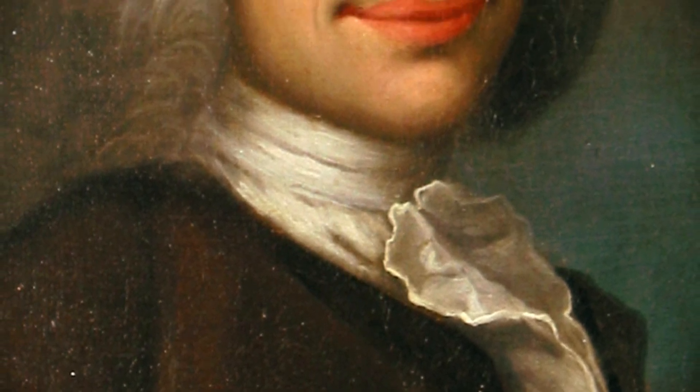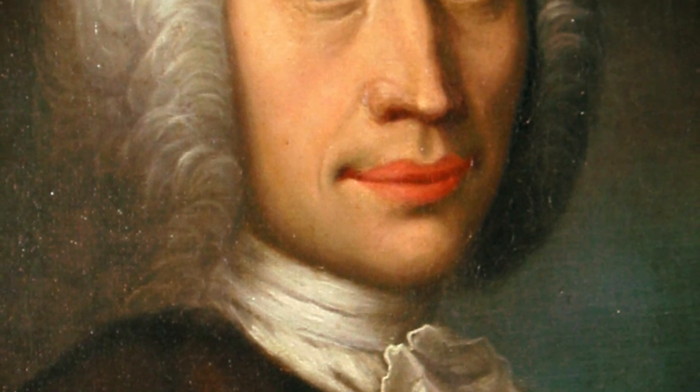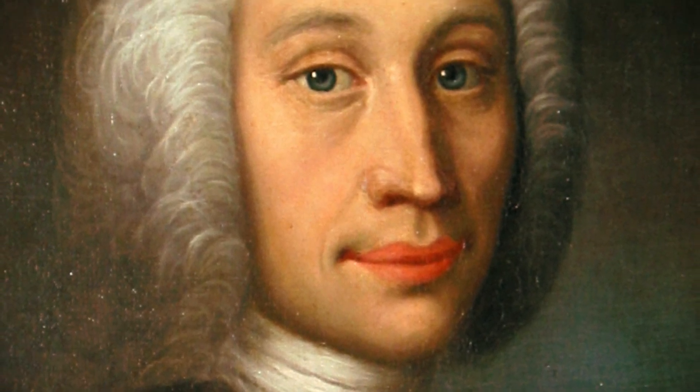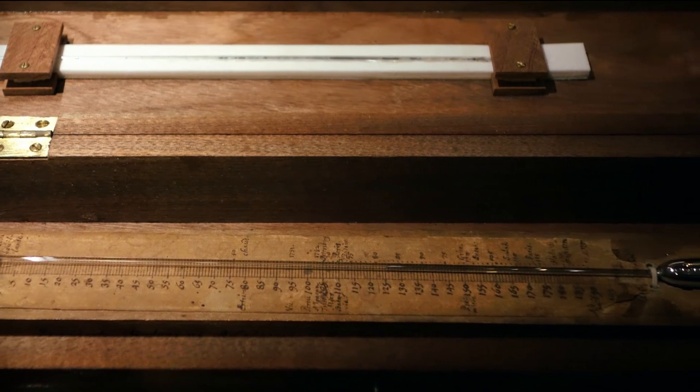Complementing Fahrenheit's temperature scale was the Celsius scale. Invented by Swedish astronomer Anders Celsius around the same time period it aligned its units with the freezing and boiling point of water.